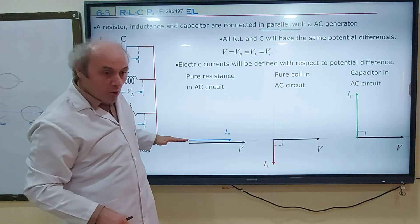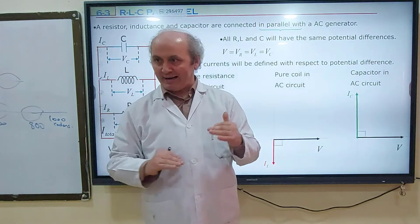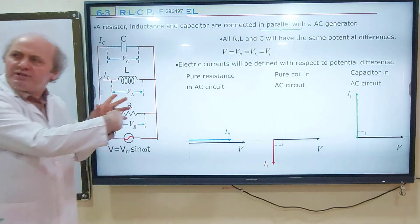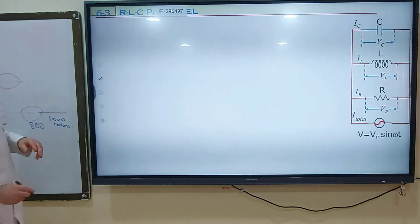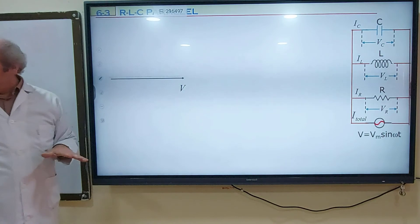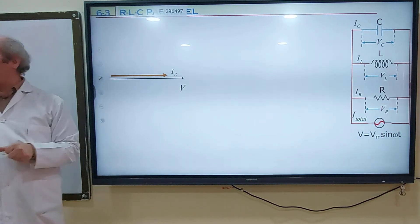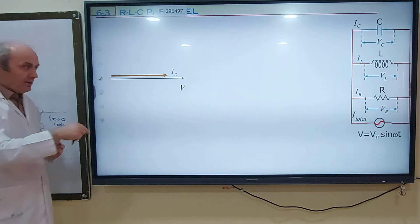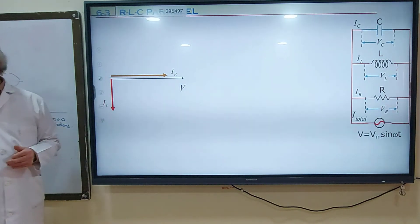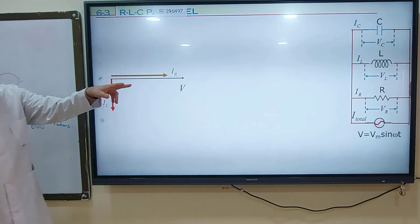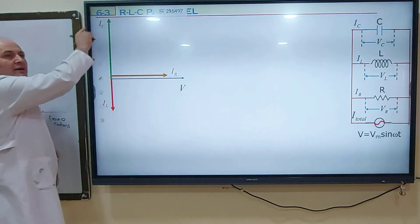We make all the V's in the same direction because they are the same in parallel combinations, then join them into one single phasor. V is common for all. For the resistor, IR is in phase with V. For the coil, IL is lagging behind — it's going to be in the negative y direction. But for the capacitor, IC is leading, so IC must be in the positive y direction.